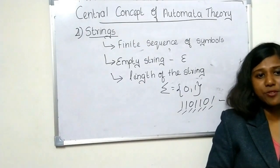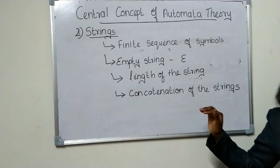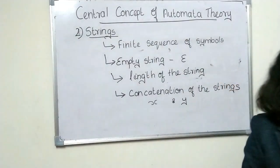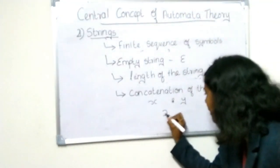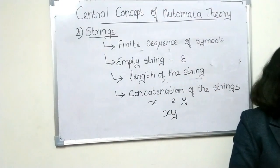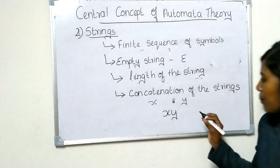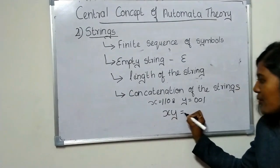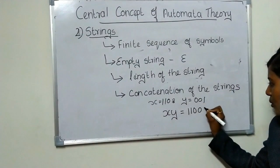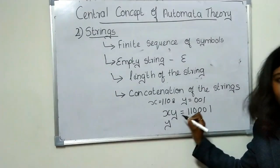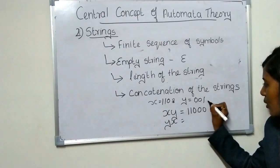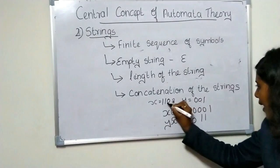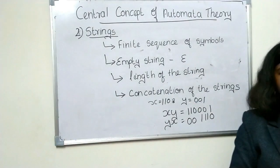Next, concatenation of strings. Let X and Y be two strings. Then XY denotes the concatenation of X and Y. Suppose X equals 1,1,0 and Y equals 0,0,1 — then XY will be 1,1,0,0,0,1. If we want to find YX, then Y equals 0,0,1 followed by X equals 1,1,0, giving 0,0,1,1,1,0. That is concatenation of strings.